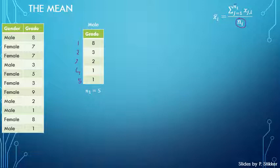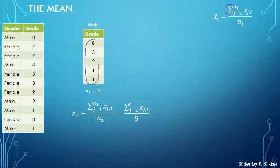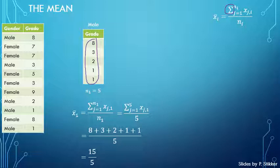I fill N1 into the formula, substituting both instances with 5. The sum sign simply means to add all of those values up, so that's 8 plus 3 plus 2 plus 1 plus 1 divided by 5, which is 15 over 5. So X-bar 1, the average of the male scores, is 3.